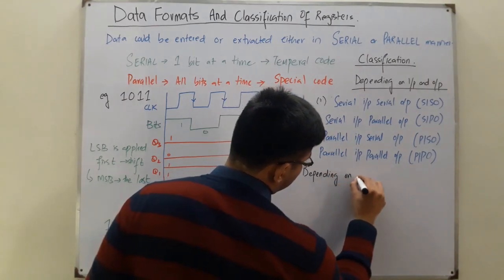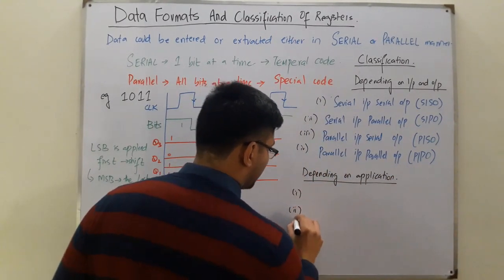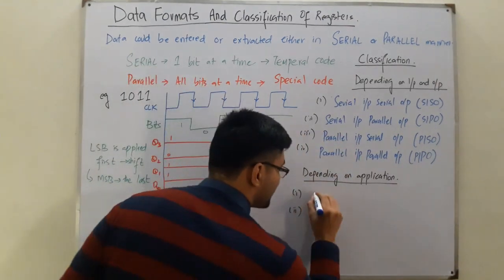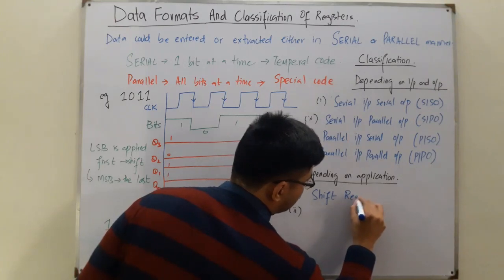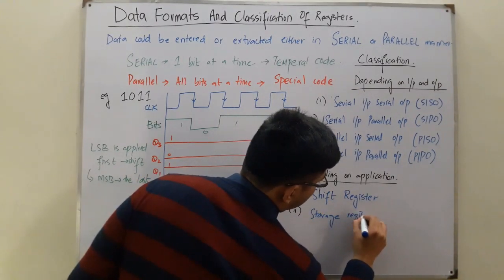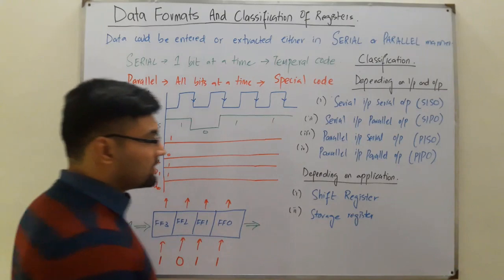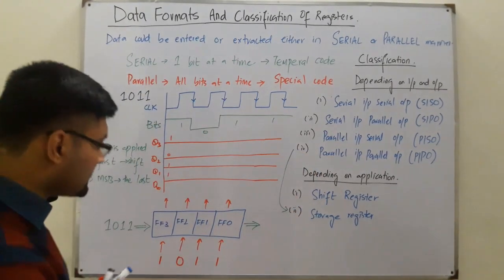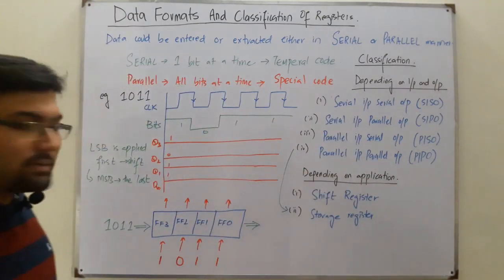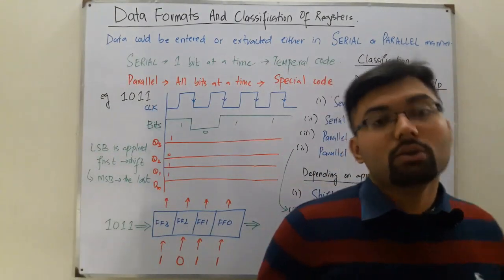Depending on application, registers also have two types: the shift register, which we are going to see in great detail for each of these four modes, and the storage register. All registers are used for storing, but the parallel input parallel output mode is a direct storage register — you are just entering and extracting data, doing nothing else. In the others, you have to do some shifting at least.